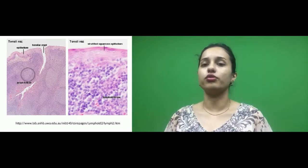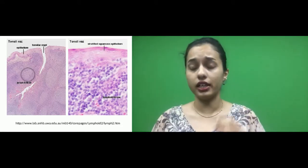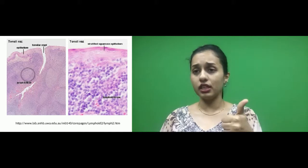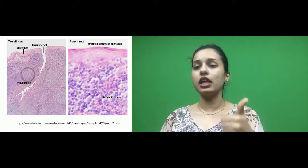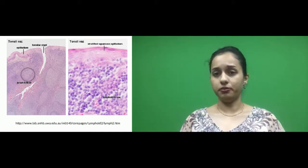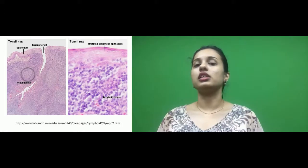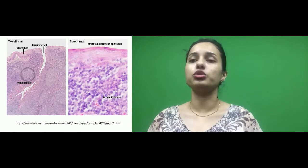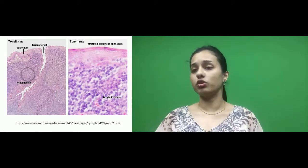You can see lots of lymphocytes. The two main identifying features for a tonsil are stratified squamous epithelium and the presence of tonsillar crypts. As you go deeper, you can see lots of aggregation of lymphatic tissue, and those are called lymph follicles or lymphatic nodules.